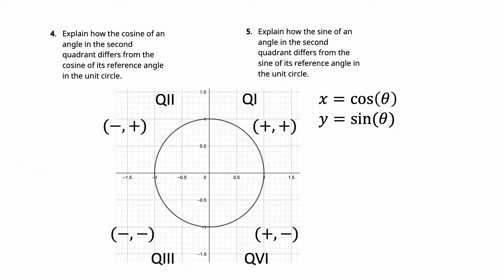Explain how the cosine of an angle in the second quadrant differs from the cosine of the reference angle in the unit circle. Since x is the same as cosine, x values are negative in the second quadrant. The reference angle is always projected into the first quadrant, so it's positive — you have to tack on the negative because of the quadrant. For example, 135 degrees: subtract from 180 and get 45. Cosine of 45 is √2/2, but in the second quadrant you add the negative, so cosine of 135 is −√2/2.